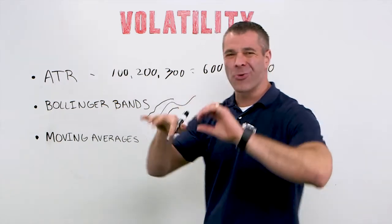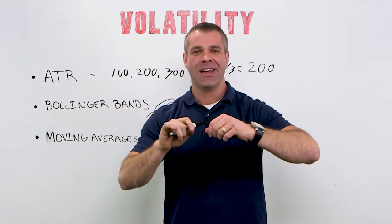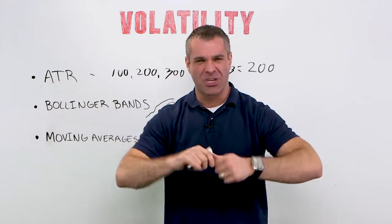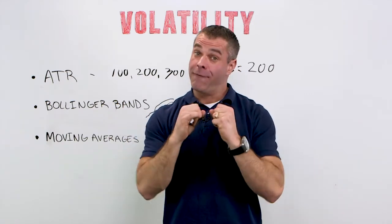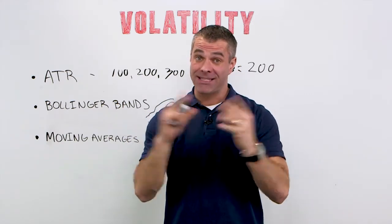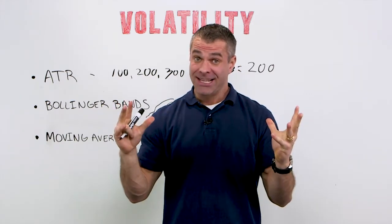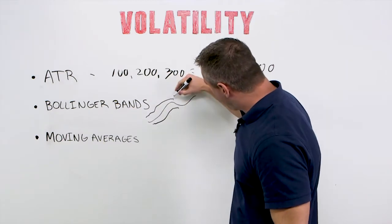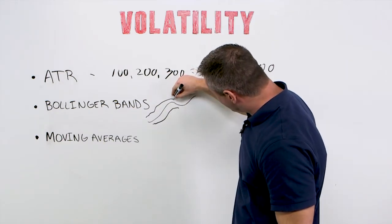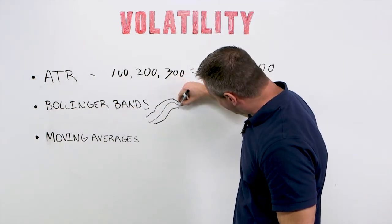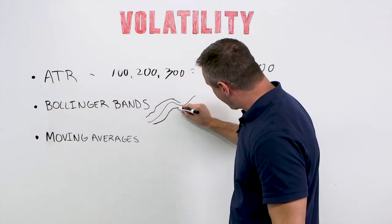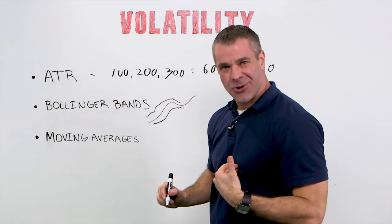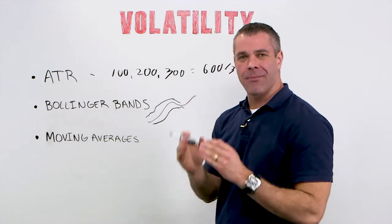I call this the rubber band effect. It's almost like a rubber band — you take it and you twist it, twist it. Eventually that rubber band's going to snap. Well, this is kind of that rubber band effect. When we get those really tight Bollinger Bands around price, that's when we as traders start to get excited.